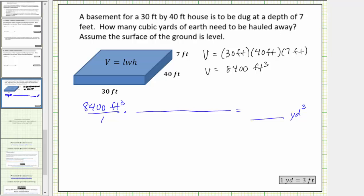To begin building the unit fraction, we know we must have feet in the denominator and therefore we have yards in the numerator. Because the conversion is one yard equals three feet, one conversion factor is one yard divided by three feet.